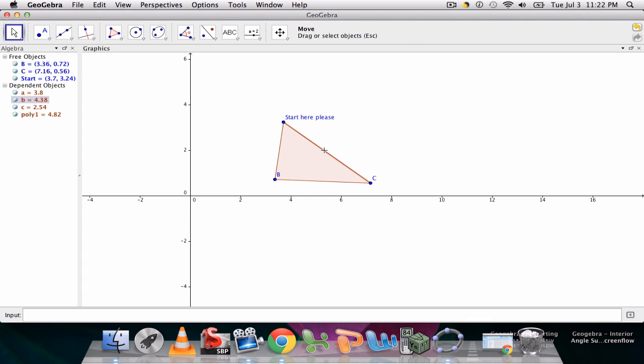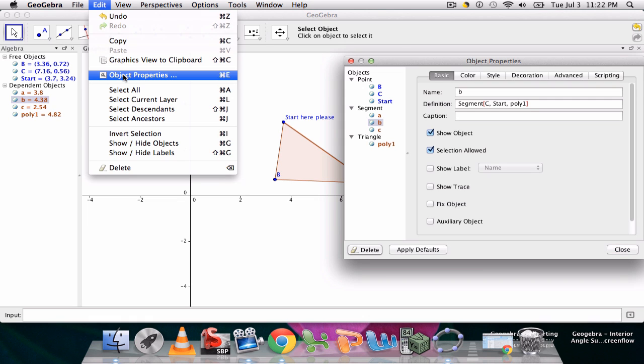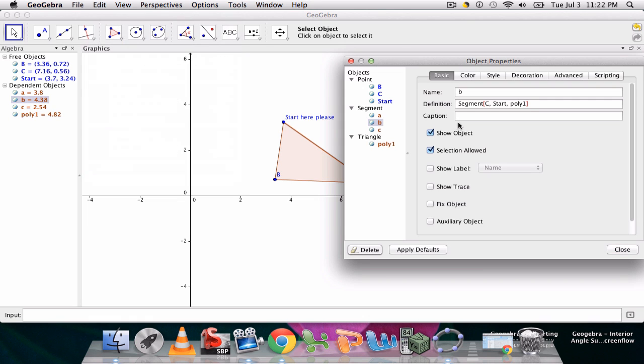I can do the same thing with the side right here. If I click this and I go to my object properties again - to do that I can hit ctrl or command E, or go under edit object properties.